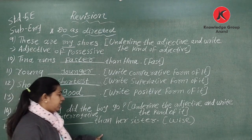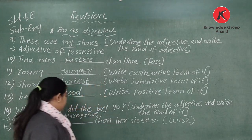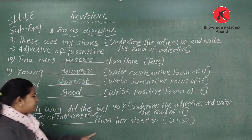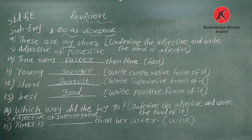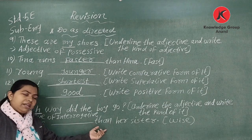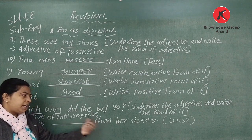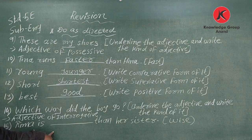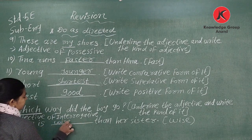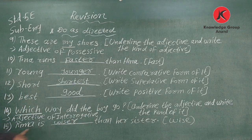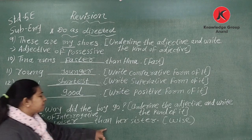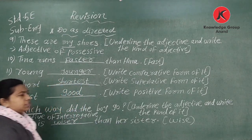Number fifteen: 'Rima is ___ than her sister.' Bracket says 'wise.' Since we have 'than,' we need comparative form. Rima is W-I-S-E, and adding E-R gives 'wiser.' So Rima is wiser than her sister.